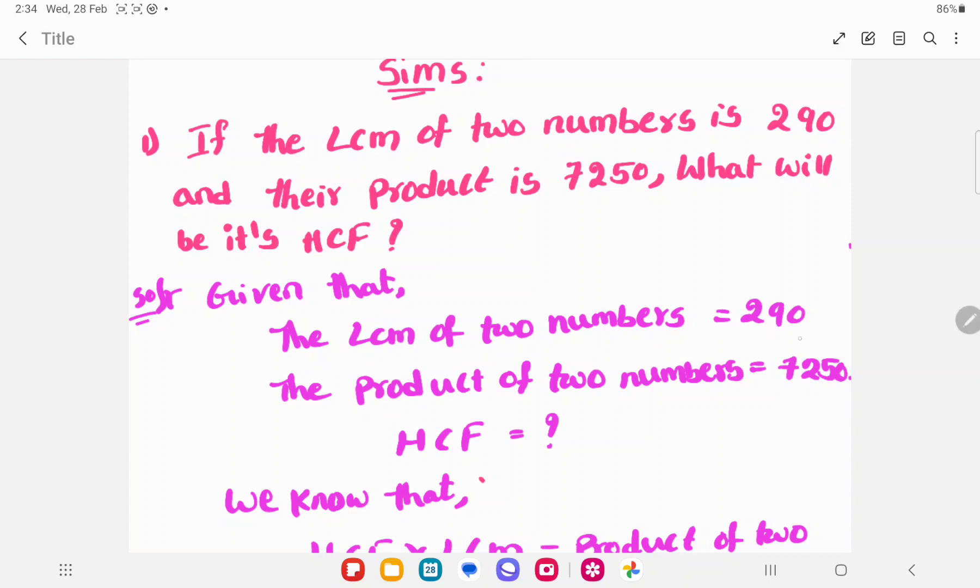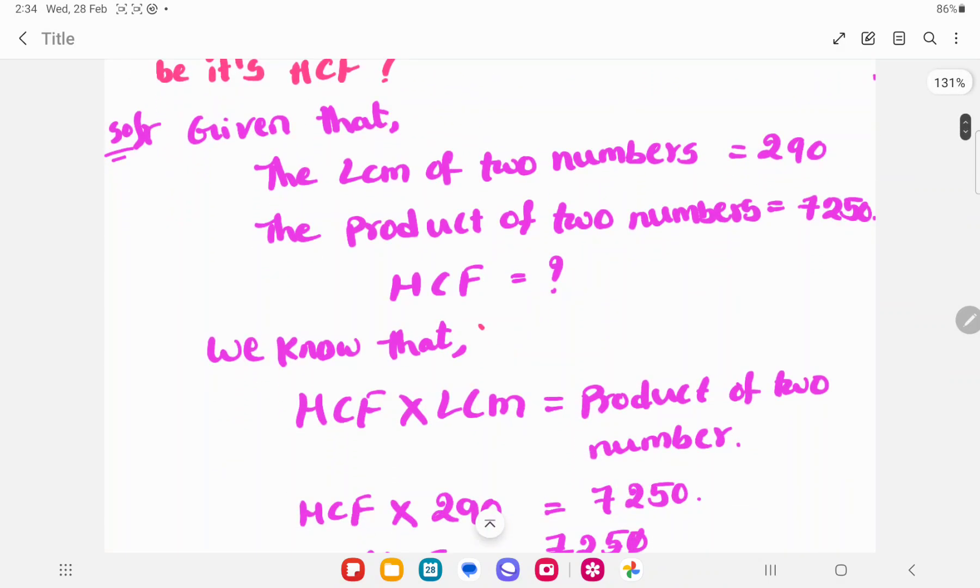The LCM of two numbers is 290 and the product of two numbers is 7250. You need to find the HCF. We know that HCF times LCM equals the product of two numbers.